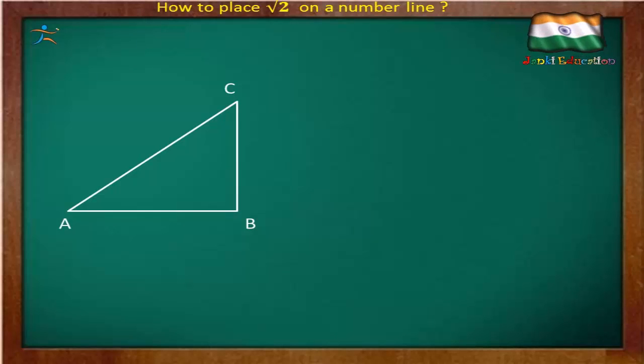Here we have right angle triangle ABC. This triangle is with the sides A, B, and C respectively. Measurement of these sides are 1 cm for AB and 1 cm for BC.